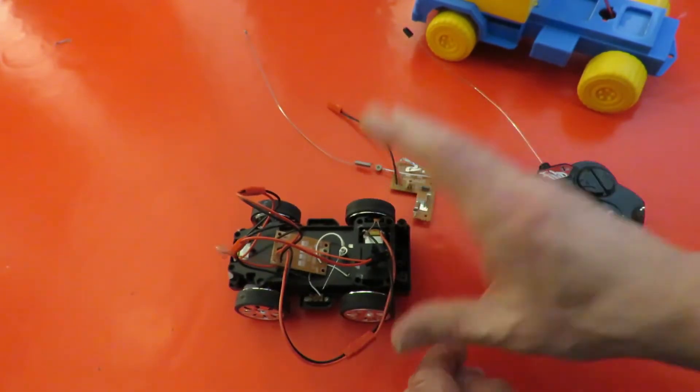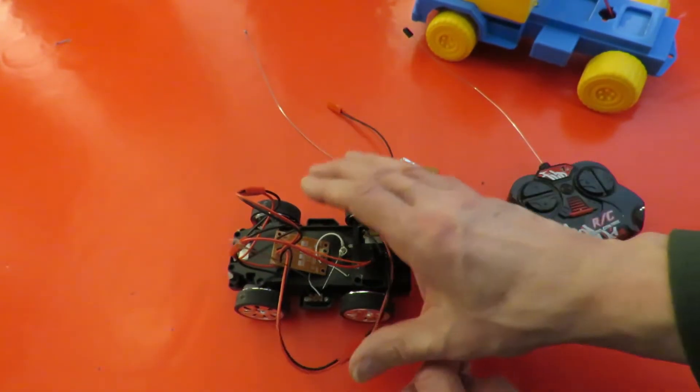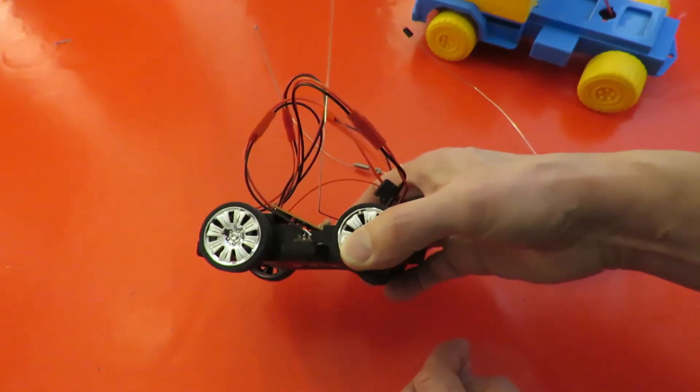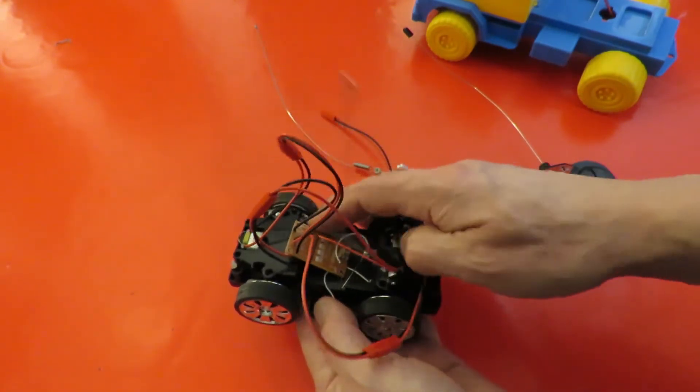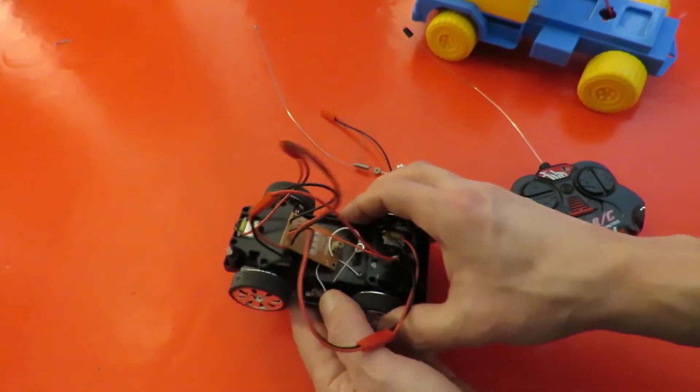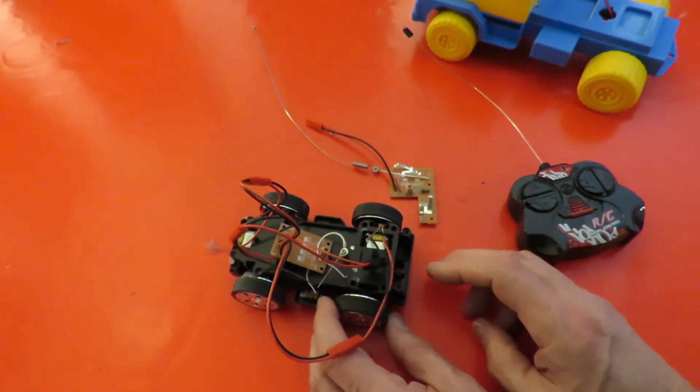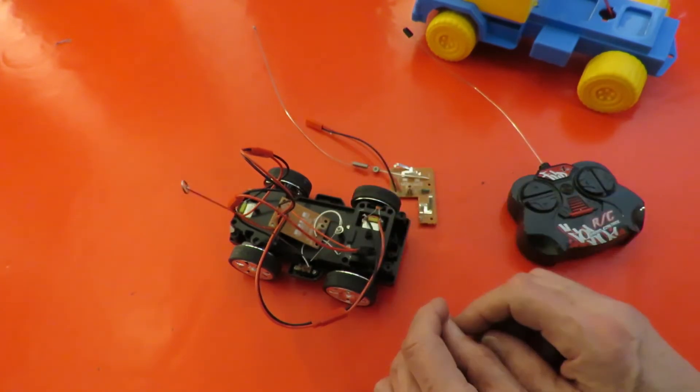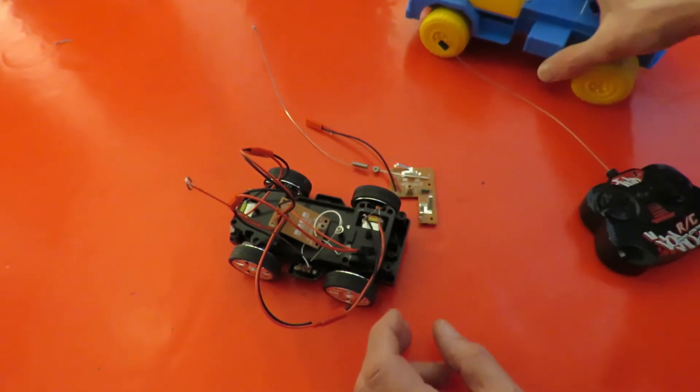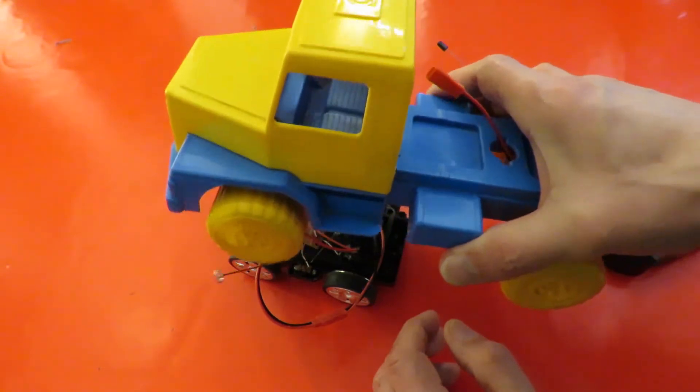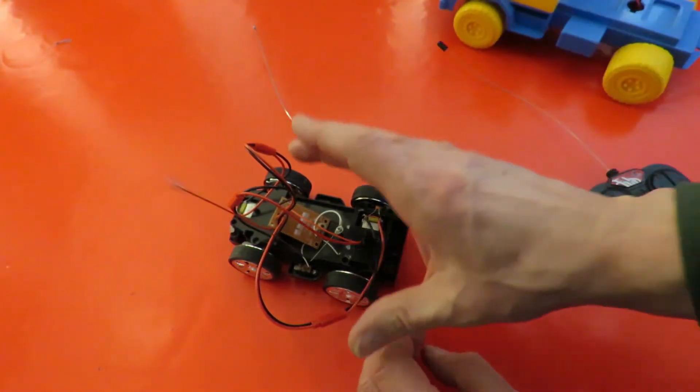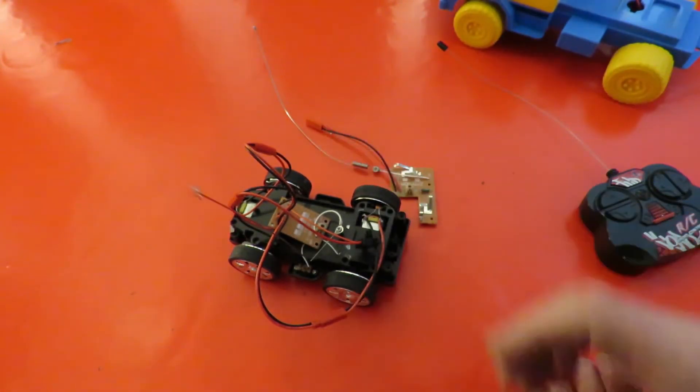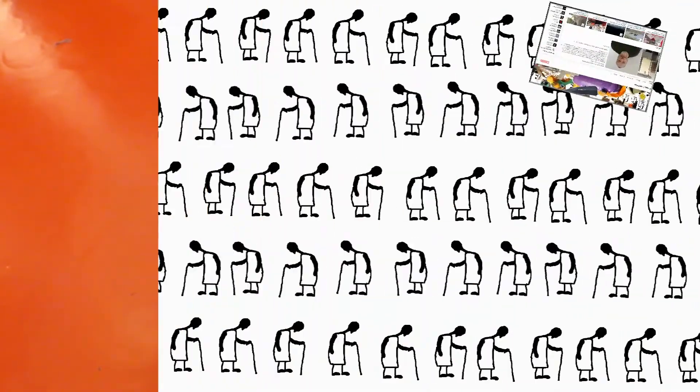I buy cheap radio controlled cars in charity shops so I can pinch the bits out of them. This guy had a car with a broken receiver and he wanted to replace it, so this is a good example of how to do it. Thanks for watching.